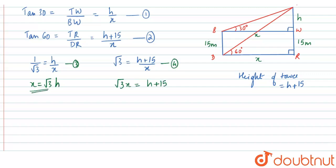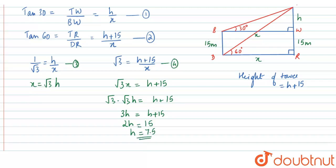Substituting x = √3·h into √3·x = h + 15, we get √3 × √3·h = h + 15, so 3h = h + 15. Therefore 3h − h = 2h = 15, giving h = 15/2 = 7.5. Substituting back, x = √3 × 7.5 ≈ 13 meters.